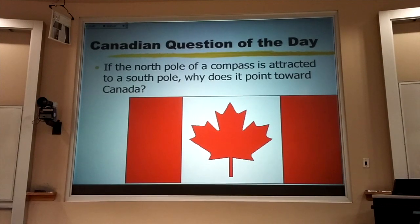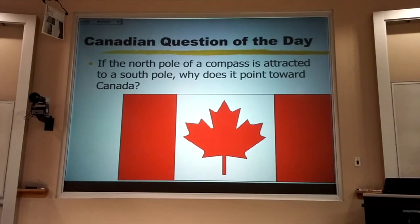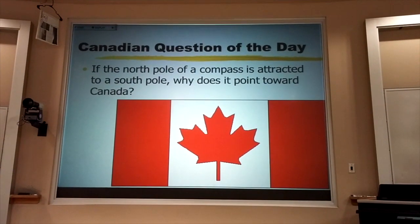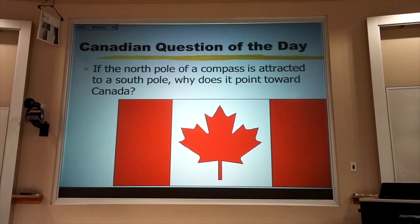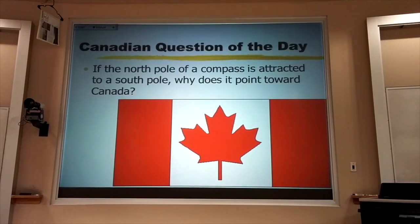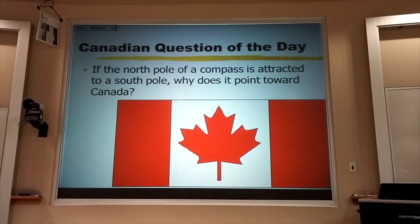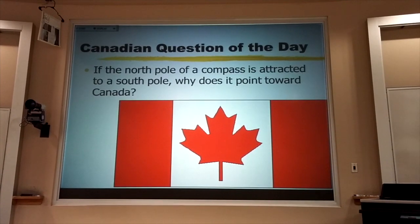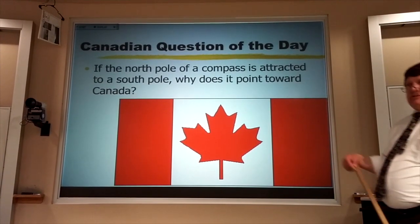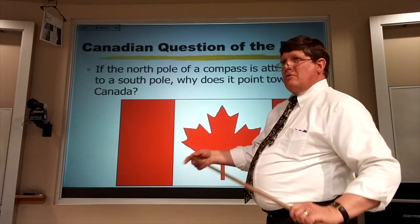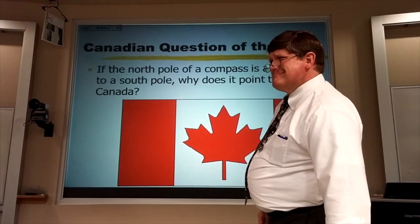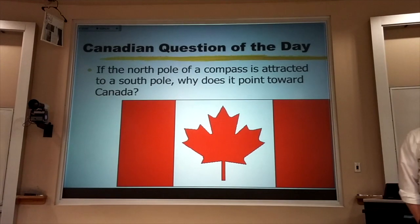This brings us to the Canadian question of the day. If the north pole of a compass needle is attracted to a south pole of a magnet, why does it point towards Canada, which is magnetic north? What side of the magnet do you put the arrow on?